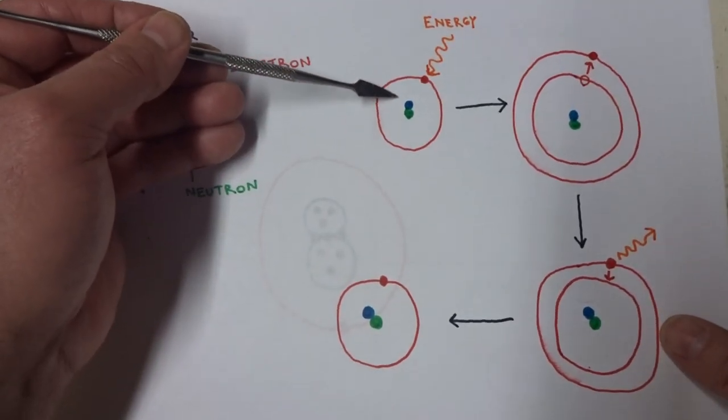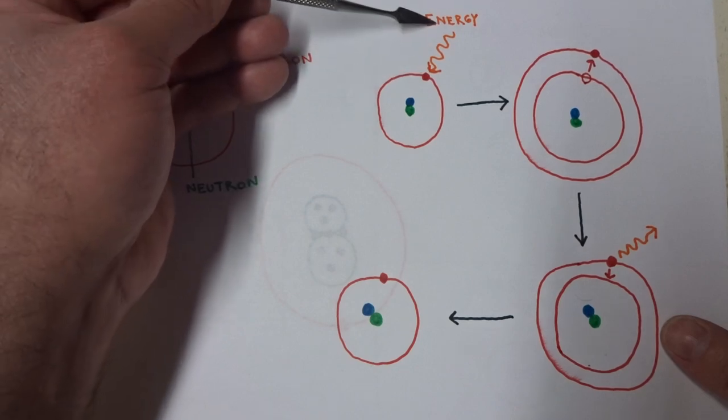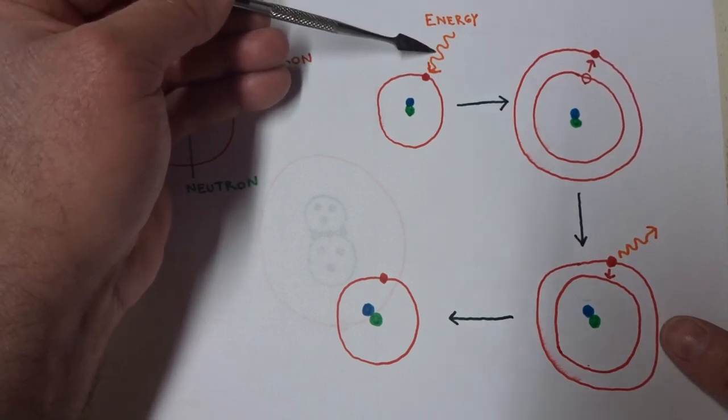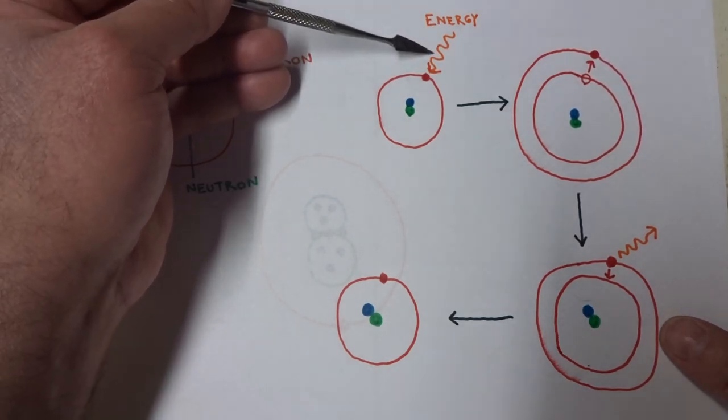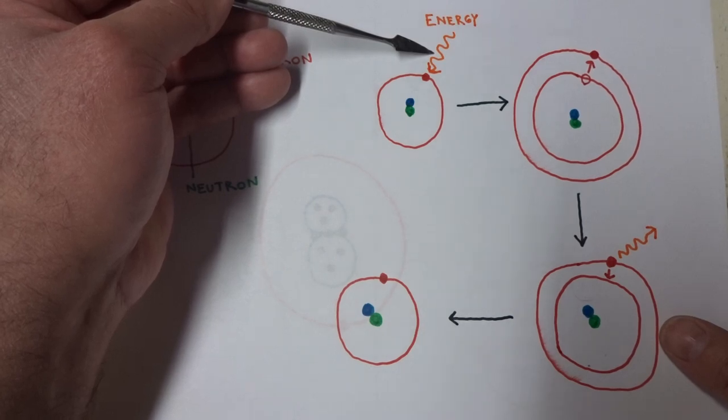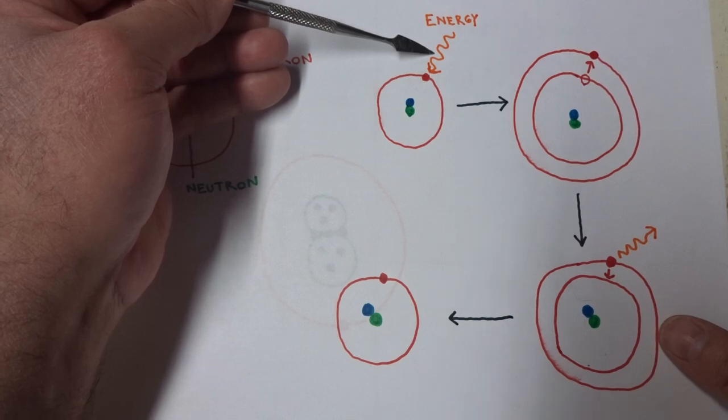An atom absorbs energy in the form of an electromagnetic wave, such as infrared, visible, ultraviolet, x-ray, and gamma ray.